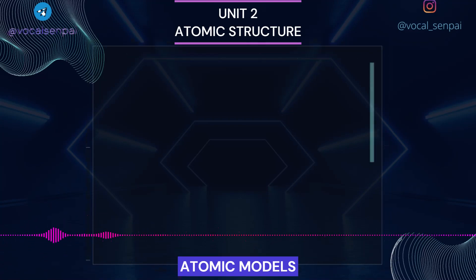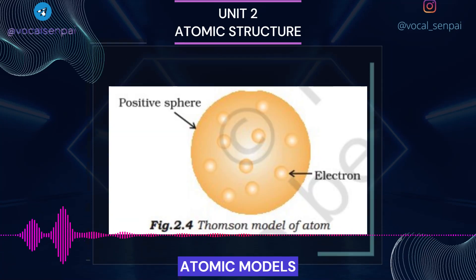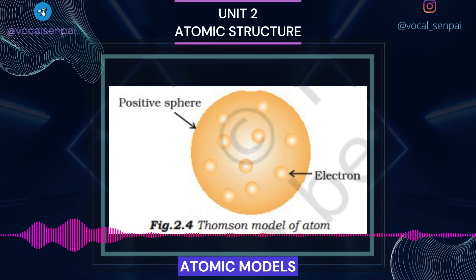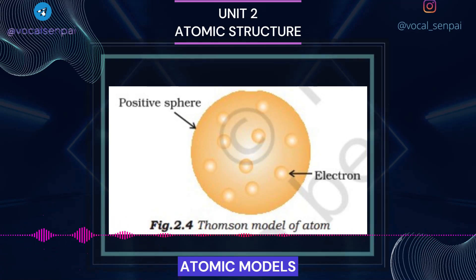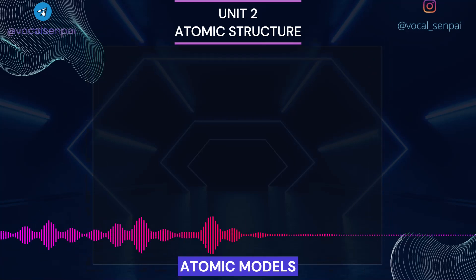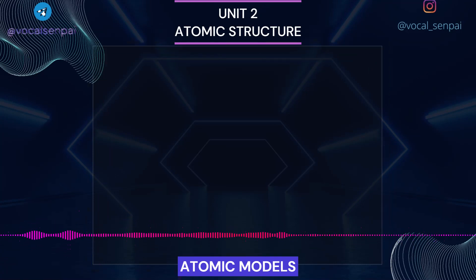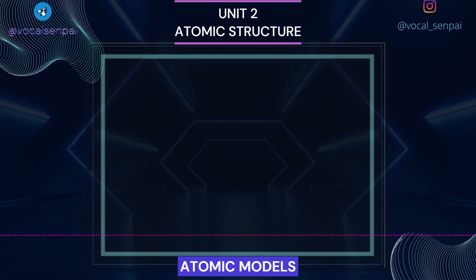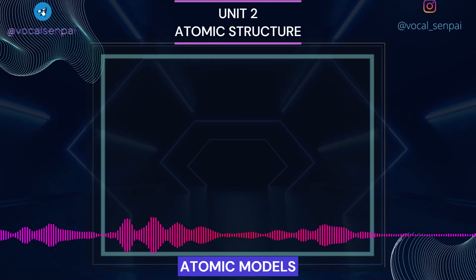Thomson Model of Atom: J. J. Thomson, in 1898, proposed that an atom possesses a spherical shape (radius approximately 10⁻¹⁰ m) in which the positive charge is uniformly distributed. The electrons are embedded into it in such a manner as to give the most stable electrostatic arrangement. Many different names are given to this model — for example, plum pudding, raisin pudding or watermelon. This model can be visualized as a pudding or watermelon of positive charge with plums or seeds (electrons) embedded into it. An important feature of this model is that the mass of the atom is assumed to be uniformly distributed over the atom. Although this model was able to explain the overall neutrality of the atom, it was not consistent with the results of later experiments. Thomson was awarded the Nobel Prize for Physics in 1906.